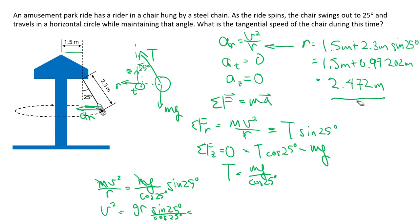Again, R is this 2.472. So as we punch out this number, we get V squared to be that. Ultimately, V is equal to that number. So about 3.4 meters per second.